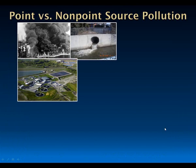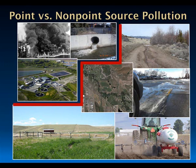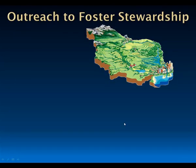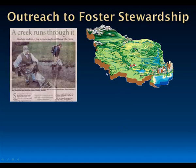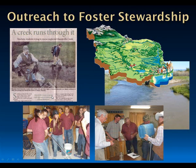Reviewing the distinction: point sources are handled through a permitting system with a regulatory framework. In contrast, most of Montana's impairment today comes from non-point sources—similar across the United States. These two types differ greatly in how they're assessed and how they're dealt with—regulatory versus voluntary framework. The implication is a big need for outreach to foster stewardship. With water quality issues coming from watersheds and running through streams, it's important to engage the public in understanding these issues, depicted here through citizen science—people making observations and understanding how their activities can affect water quality moving through a watershed.